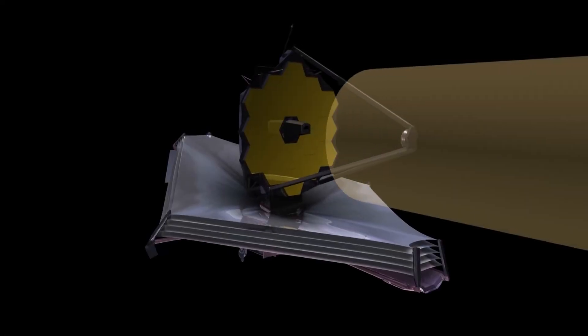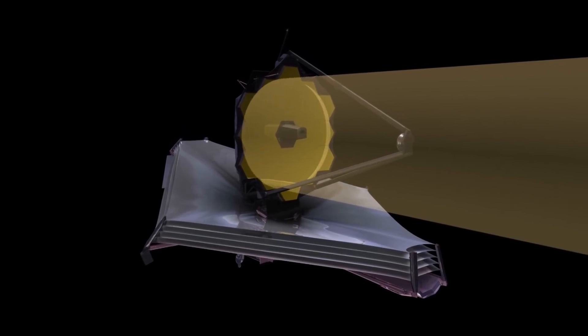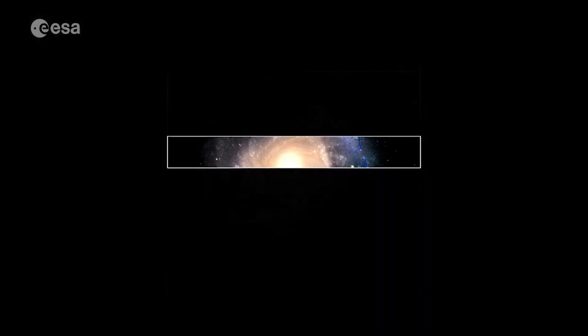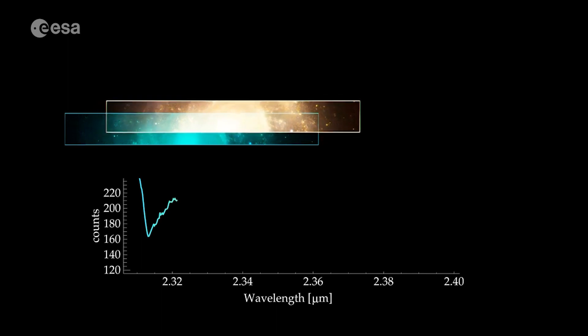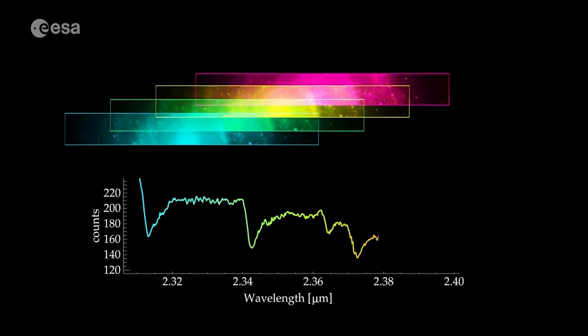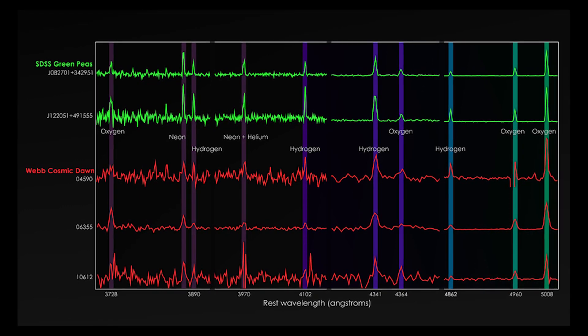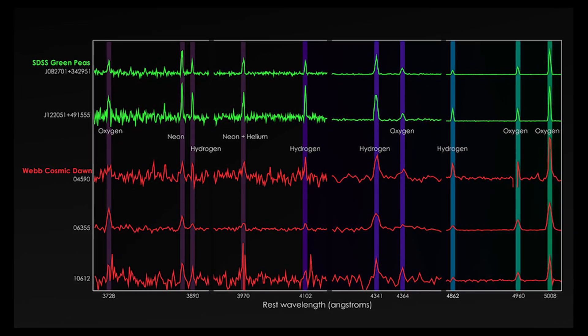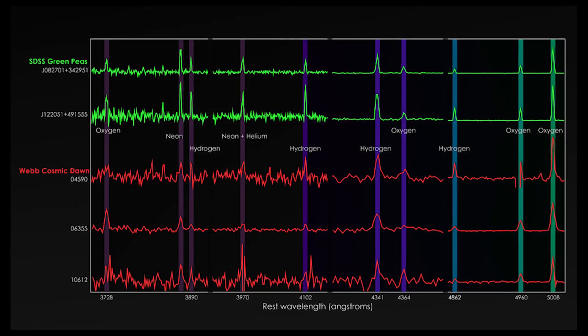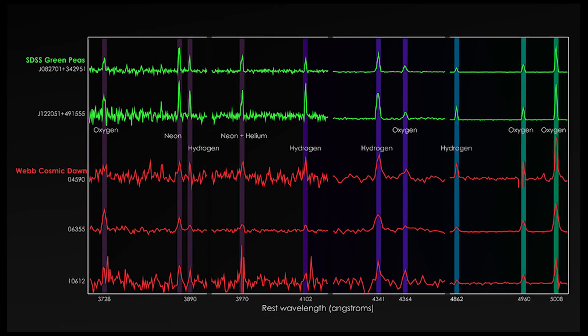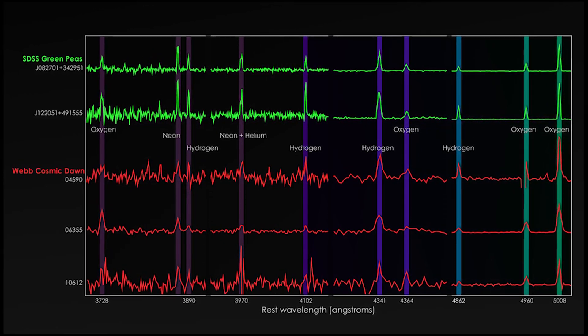James Webb's near-infrared spectrograph, or near-spec instrument, captured the spectra of some galaxies. When researchers examined these measurements and corrected them for the wavelength stretch resulting from the expansion of space, they saw characteristic features emitted by oxygen, hydrogen, and neon line up in a stunning resemblance to those seen from nearby green peas.